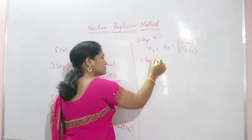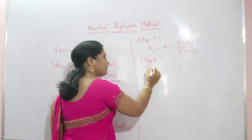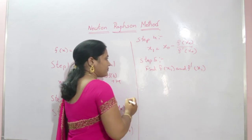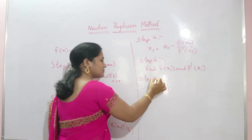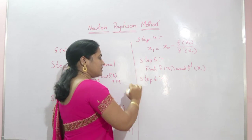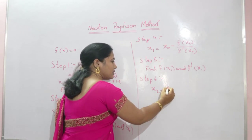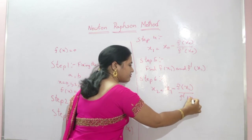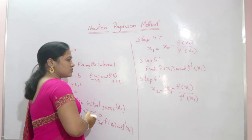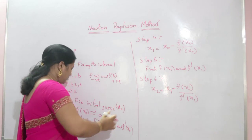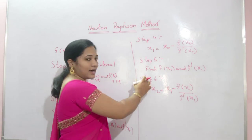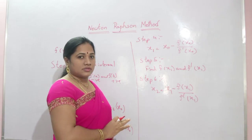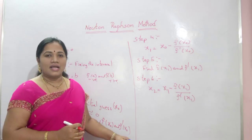Step 5 is to find f(x₁) and f'(x₁). Step 6: find the second approximation using the Newton-Raphson formula: x₂ = x₁ − f(x₁) / f'(x₁). The same procedure is repeated from step 3 until the last two approximation values are approximately the same. Then you can stop the iteration, and the solution is the last approximation value.